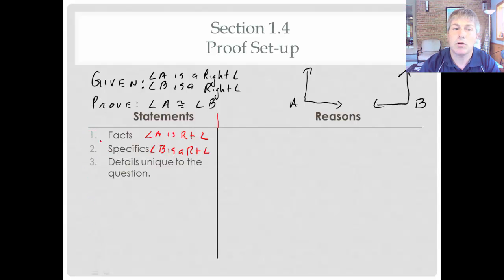And we will number our statements. So we make statement number one, A is a right angle. Statement number two, B is a right angle.